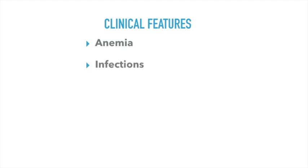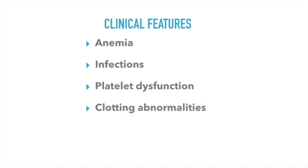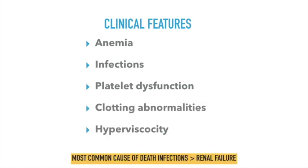Since the kidneys are affected, there is lack of production of erythropoietin. Also, the malignant plasma cells replace the bone marrow erythroid cells, causing anemia. Due to abnormal activity of the immunoglobulins, binding of light chains or immunoglobulins to platelets and clotting factors leads to platelet and clotting abnormalities as well. The most common cause of death in a patient of multiple myeloma is infections.